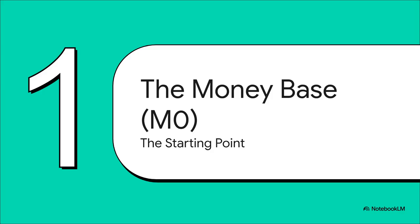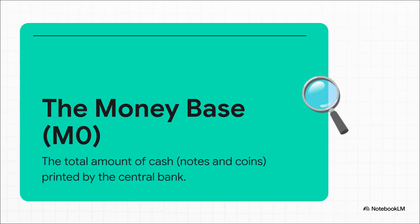Let's start at square one — the absolute foundation of all money in the economy. Economists call this the money base, or more simply M0. You can think of it as the raw material for everything else. It's every single physical bank note and every single coin that the central bank — like the Fed in the US or the Bank of Israel — has ever printed and pushed out into the world. If you could somehow gather all of it into one giant pile, that pile would be M0.